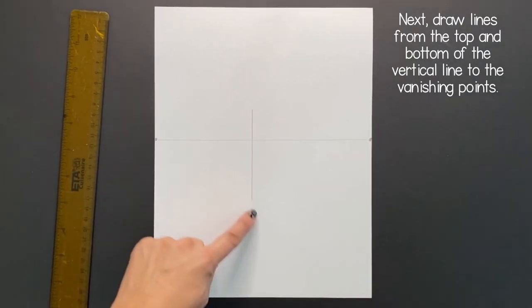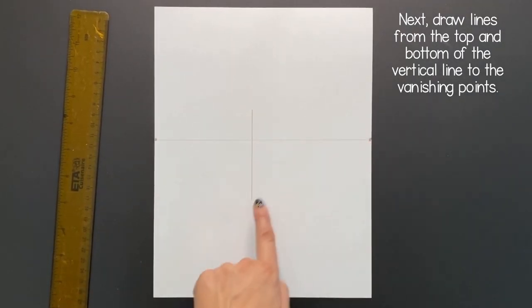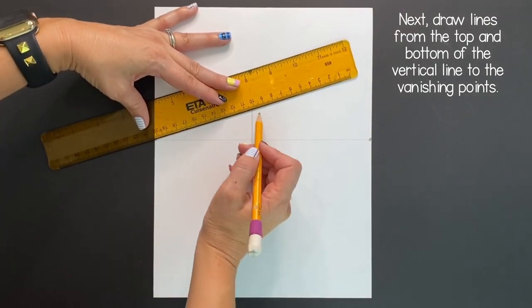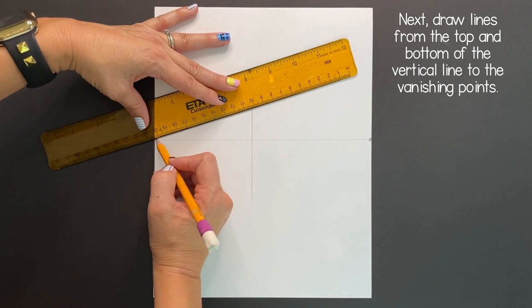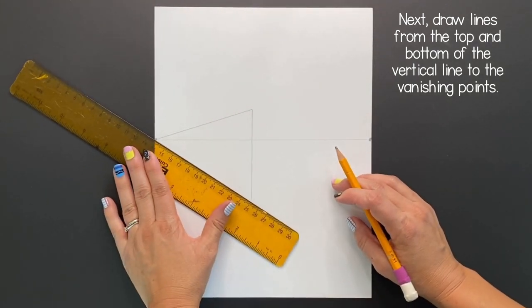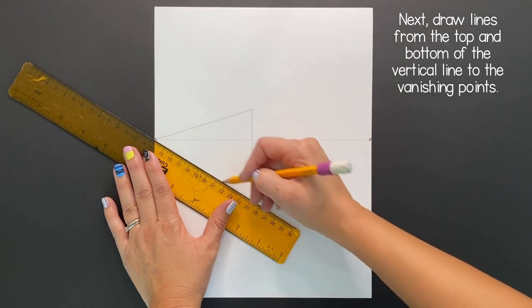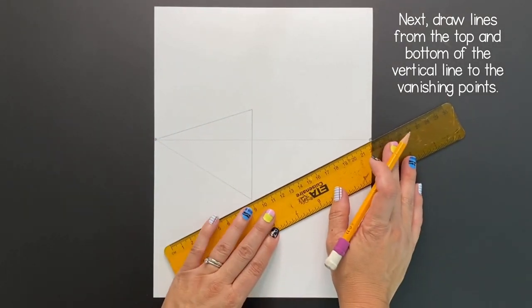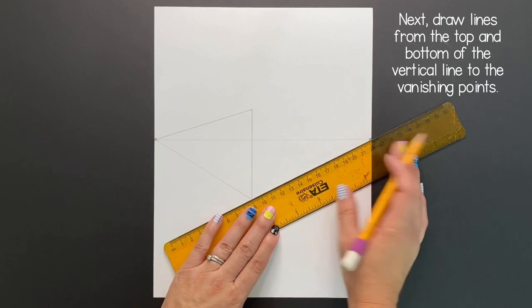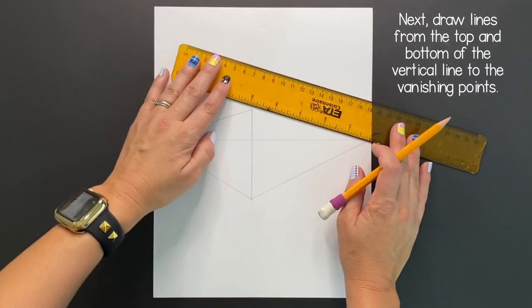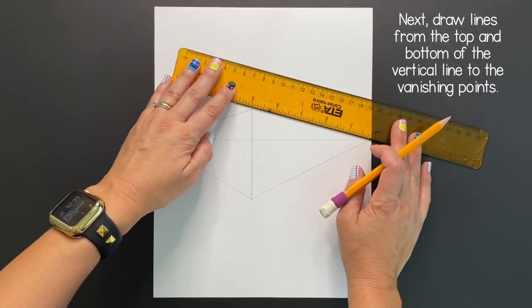Next you're going to draw lines from the top and bottom of the vertical line to the vanishing points starting on the left side and then working to the right. Remember these are points of convergence which reference two or more things coming together or the joining of something. Think of them as magic force fields pulling every line that you draw, particularly these diagonals, to them.